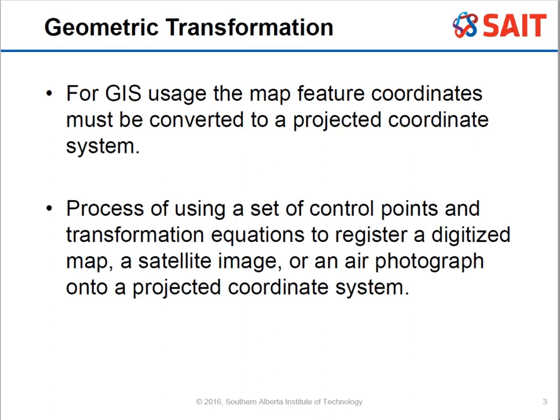There is something called a geometric transformation, and this is when we're trying to convert our image to a map. We use actual map features and coordinates to project our image onto that map. The map needs to be converted to a projected coordinate system — so if you have a map in latitude and longitude, we project it flat, then adjust the image onto that projected surface.